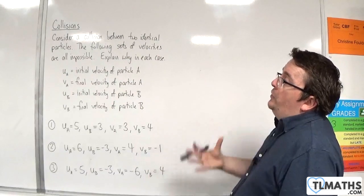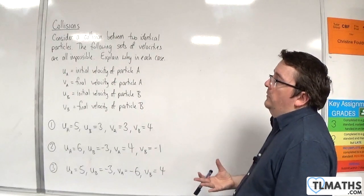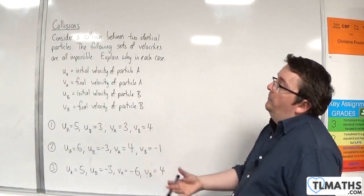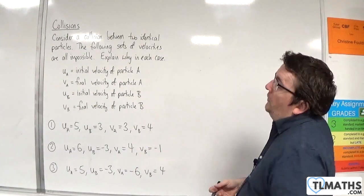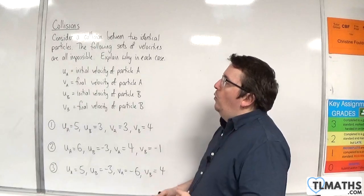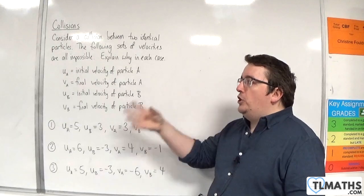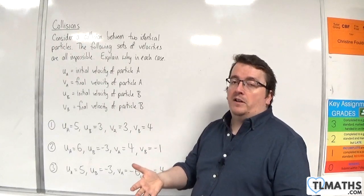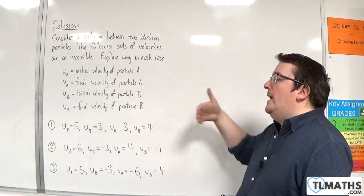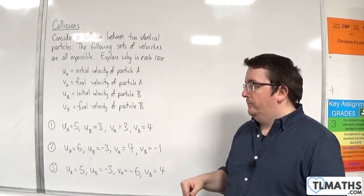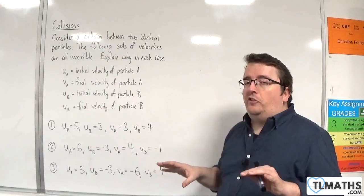We're going to consider a collision between two identical particles. The two particles, A and B, both have the same mass. The following sets of velocities are all impossible. Explain why in each case. Ua and Va represent the initial and final velocity of particle A. Ub and Vb represent the initial and final velocities of particle B. They're all in meters per second.